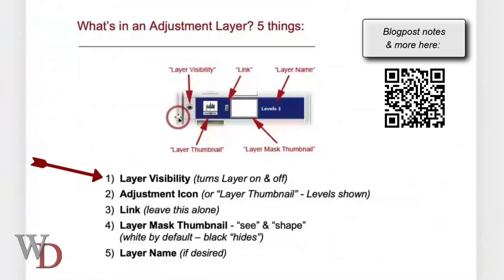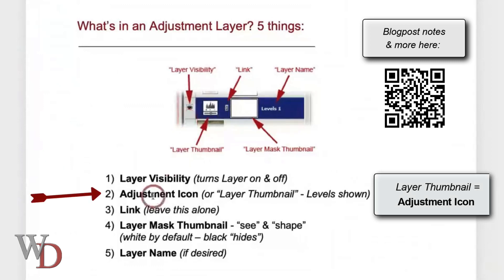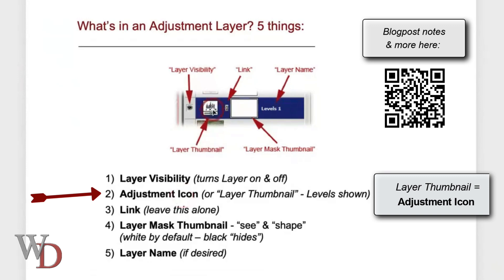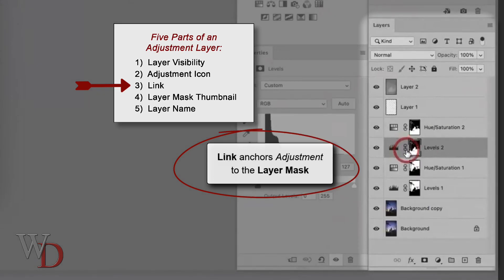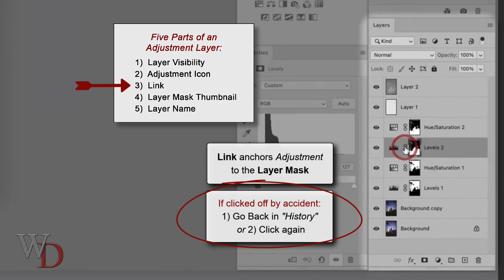The first part is the layer visibility, which turns the layer on and off. Then you have the adjustment icon — technically called the layer thumbnail, but I find that confusing with the layer mask thumbnail, so I call it the adjustment icon. It's whatever your adjustment is, shown as an icon. Then you have the link, which anchors your adjustment to your layer mask. 99.9% of the time you're going to leave this linked.